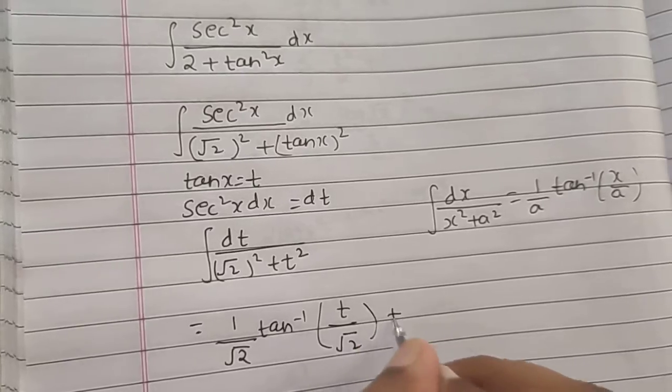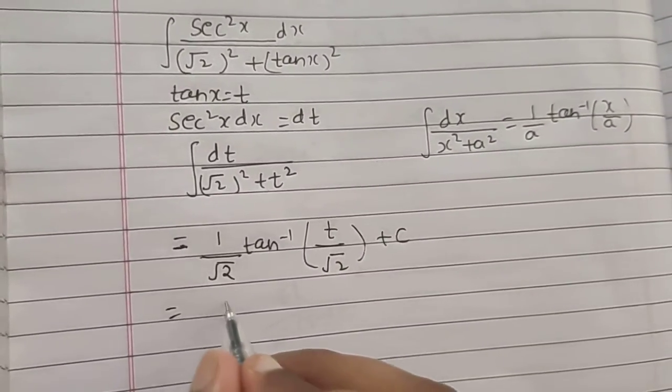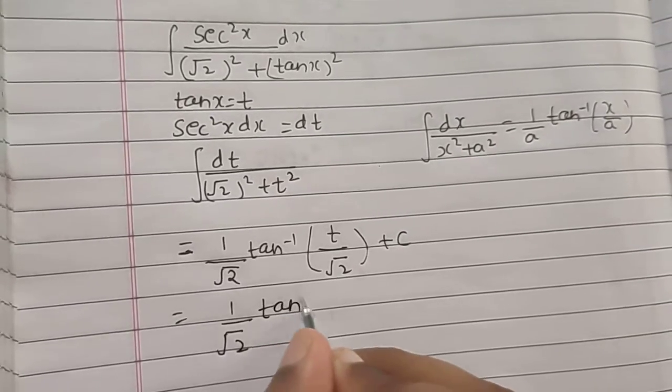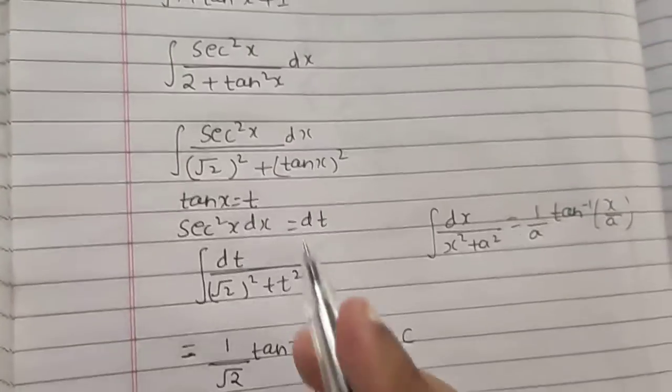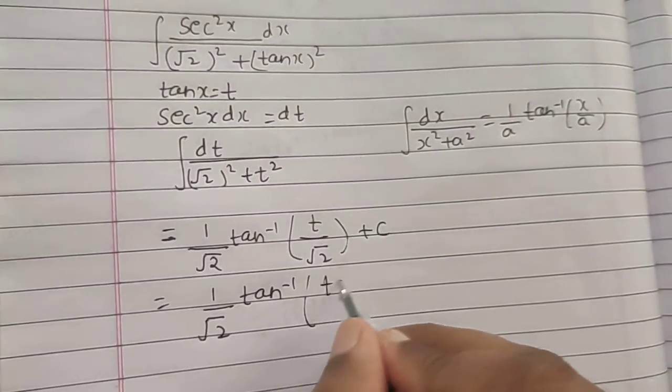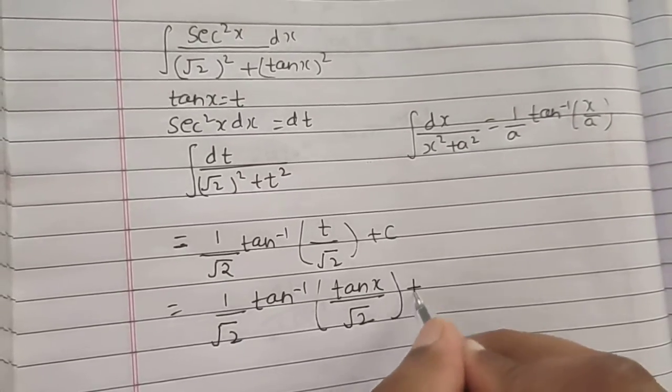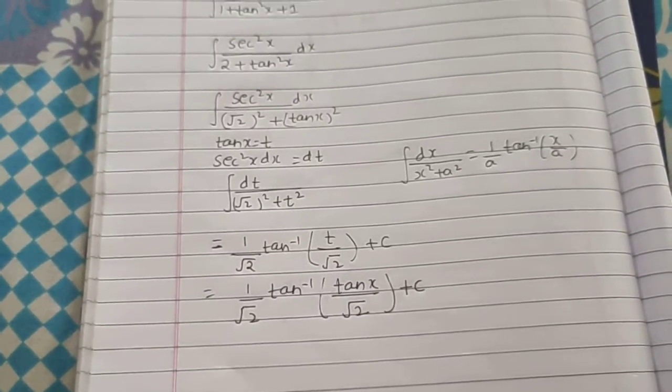Plus a constant C. Now I am going to put the value of t back, so tan⁻¹(t) was tan x, so tan x divided by √2. A simple integral with smooth steps, not so difficult.